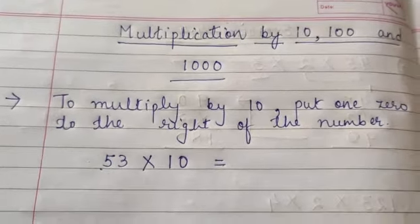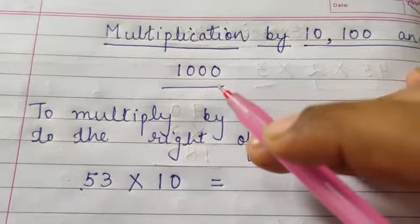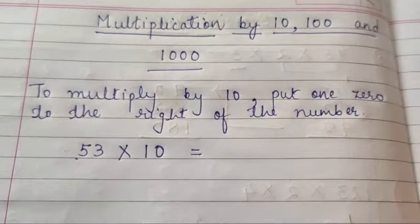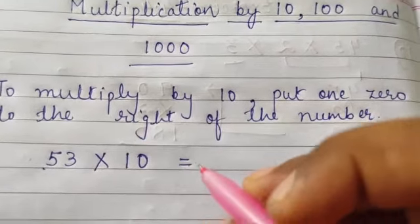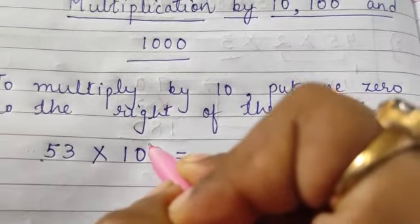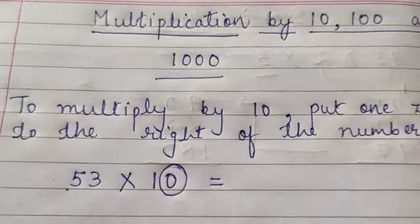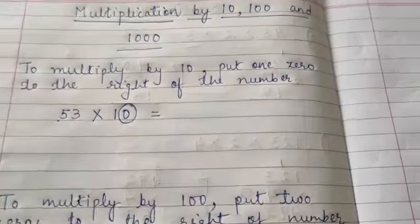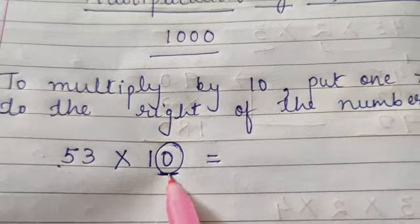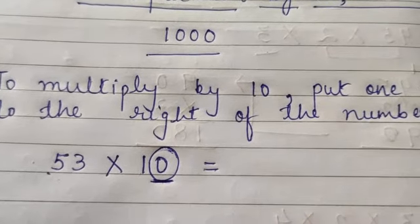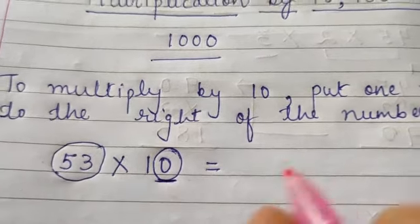Children, see what you need to do is whenever you are multiplying any number by 10, 100, or 1000 — in other words, whenever you are multiplying any number by the multiples of 10 — you need to focus on the zeros of the multiplier. See here, I have been multiplying 53 by 10, so you just need to focus on the zeros of the multiplier. How many zeros are there? In 10 it is 1, so you just need to write the multiplicand.